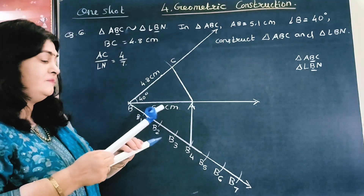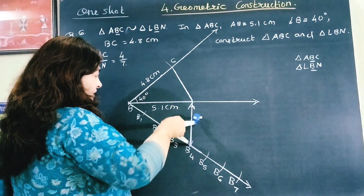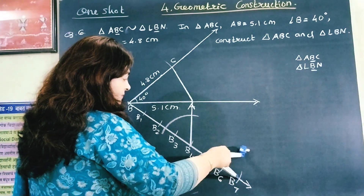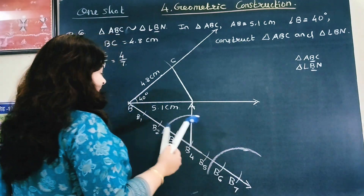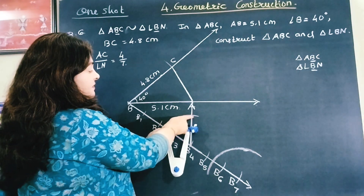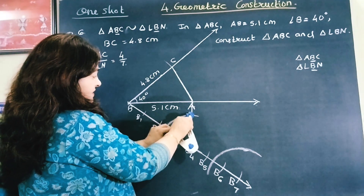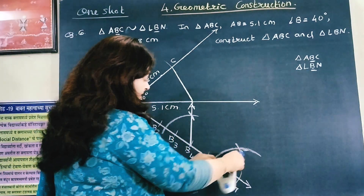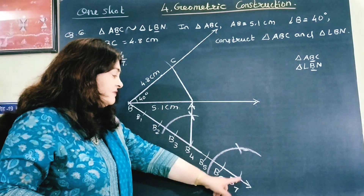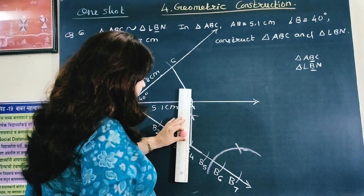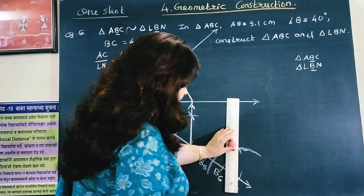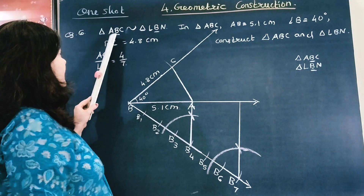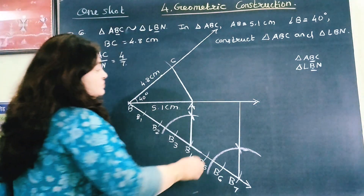Now take some random measure on compass and draw an arc at B4. With the same measure put compass at B7 and draw an arc. Then keep compass here and draw intersecting arcs by increasing or decreasing slightly. Put compass here and draw the intersecting arc. From B7 and this intersection point, draw a line — it must be parallel to B4A. Check if it is parallel — yes it is parallel. Since A corresponds to L, this new point is L.